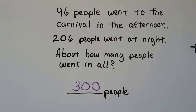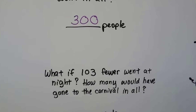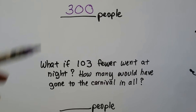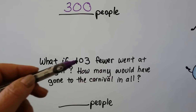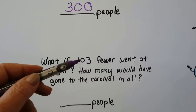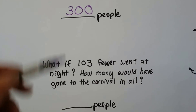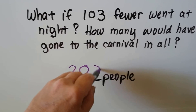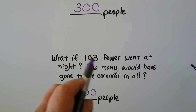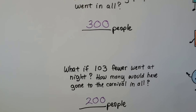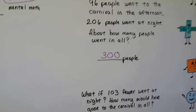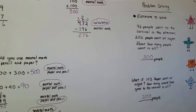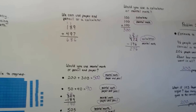So about 300 people went to the carnival. Now, what if 103 fewer people went at night - how many would have gone in all? 103 is really close to 100, so we can just take 100 away from 300, which gives us 200. That's an estimate of 200 people. We found the number closest to the hundreds and used mental math - you could have used pencil and paper, but it wasn't necessary.